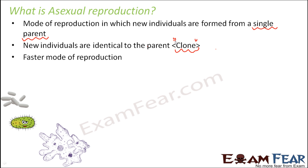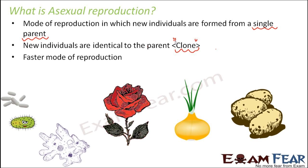This type of reproduction is generally seen in lower organisms like bacteria, amoeba — unicellular organisms made up of one cell. It is also seen in plants like potato, onion, and rose. So in most of the lower-level organisms and many plants, the asexual mode of reproduction works.